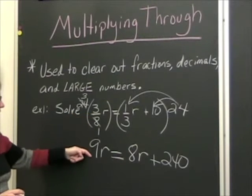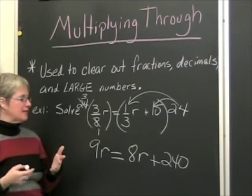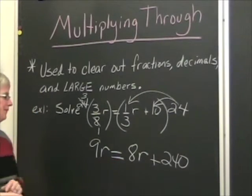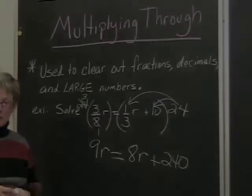The original equation and this one are equivalent equations. They're still describing the same equality, but this one doesn't have any fractions in it, so it's much easier to work with.